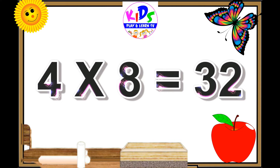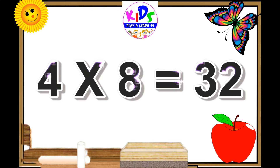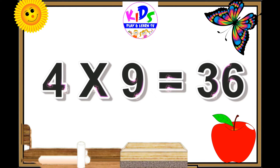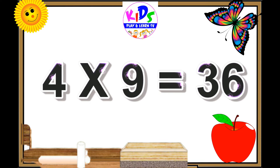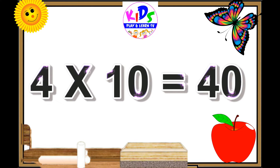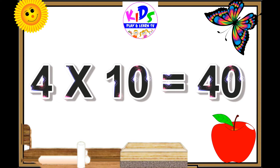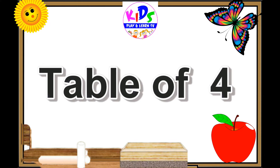Four eights are thirty-two. Four nines are thirty-six. Four tens are forty.